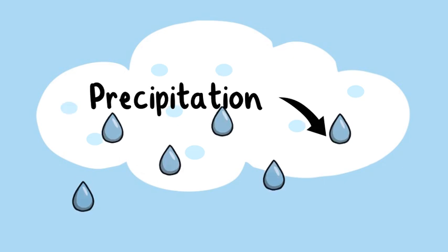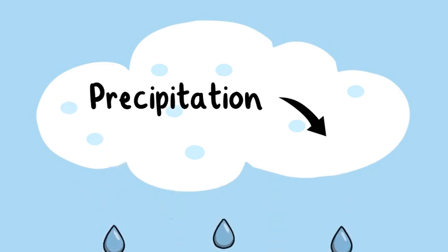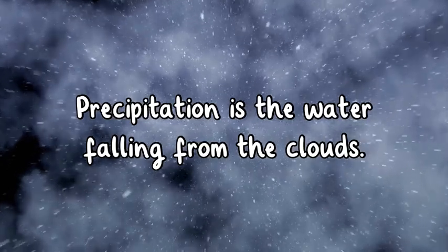After the clouds are formed because of condensation they begin to get heavier and heavier with water droplets. When the droplets are heavy enough they begin to fall from the clouds as precipitation. Precipitation is the water falling from the clouds.